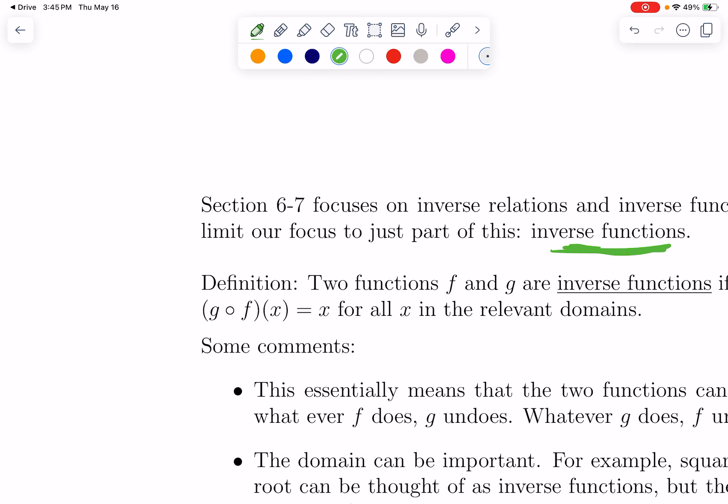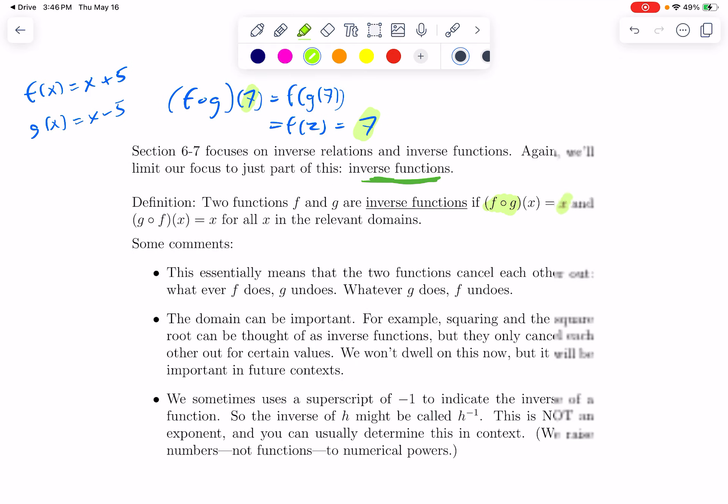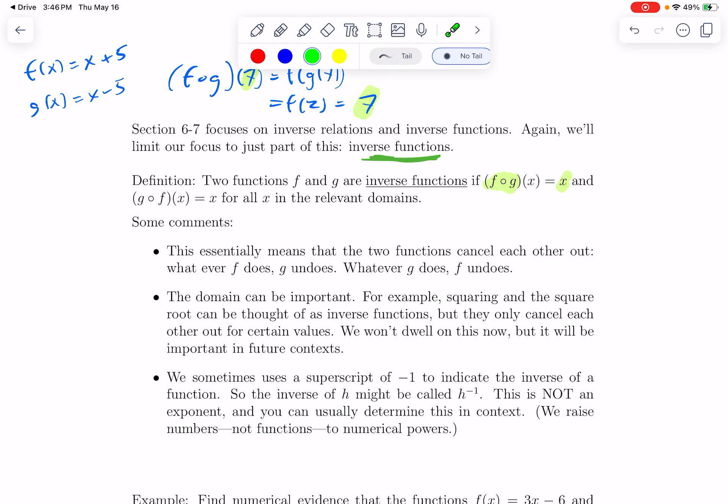You might imagine an example like F of X is the function that adds 5, and G of X is the function that subtracts 5. If I do something like F circle G of 7, that's F of G of 7, G of 7 is 2, but F of 2 is 7. I did these functions back to back and it's as though they cancelled each other out.